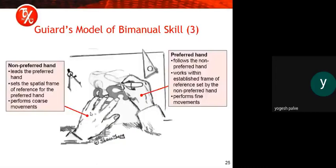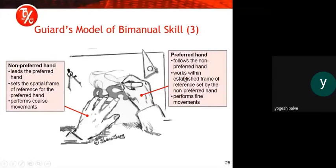In the diagram of Guiard's model of bimanual skill, we see the non-preferred hand leads the preferred hand, sets the spatial frame of reference for the preferred hand, and performs coarse movement. The preferred hand follows the non-preferred hand, works within the established frame of reference set by the non-preferred hand, and performs fine movement.